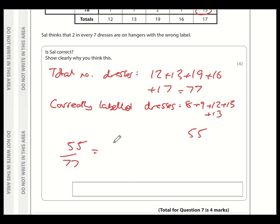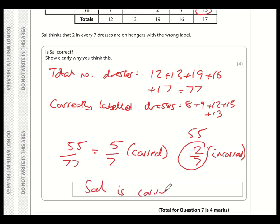So correctly labeled is 55 out of 77. And both of these numbers are in the 11 times table. So if we divide top and bottom by 11, we get 5 sevenths. So 5 sevenths are correctly labeled. So therefore, 2 sevenths are incorrectly labeled. Sally thinks that 2 in every 7, well, that means 2 out of 7. And we've got 2 out of 7. So therefore, Sally is correct.